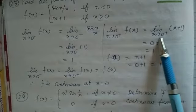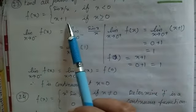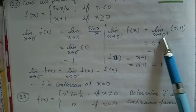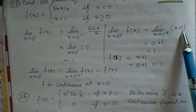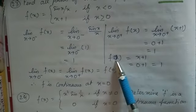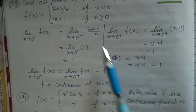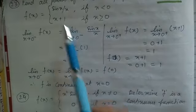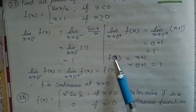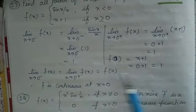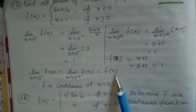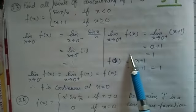The right-hand limit is limit x tends to 0⁺ of (x+1). Putting x = 0, it becomes 0+1 = 1. And at the point x = 0, f(0) = 0+1 = 1. So the left-hand limit, right-hand limit, and value of the function at x = 0 are all equal to 1, so the function is continuous.